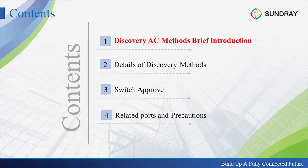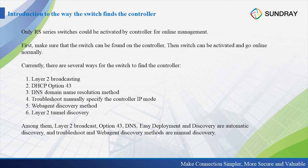The first topic is discovery AC methods — a brief introduction. There are at least six methods for a Sundry switch to discover the access controller: layer 2 broadcasting, DHCP option 43, DNS, manually config, web agent, and layer 2 tunnel. With each of these methods, we can discover the switch and approve it on the controller.